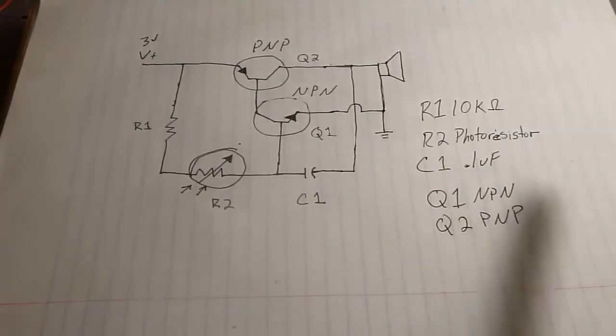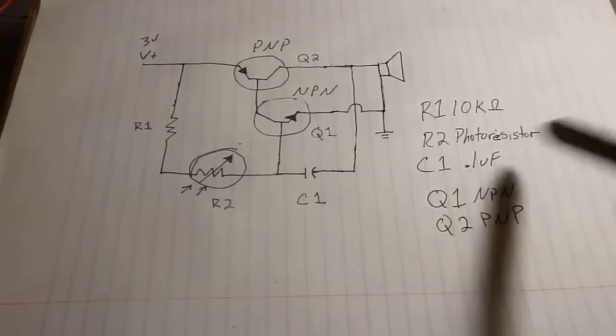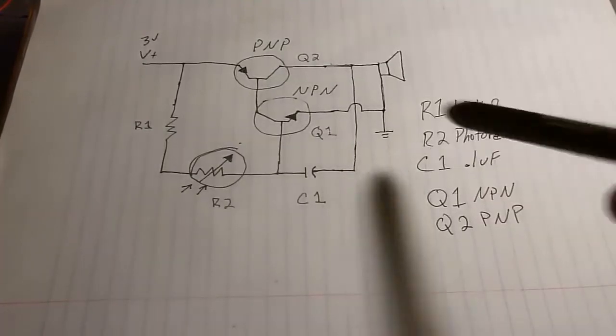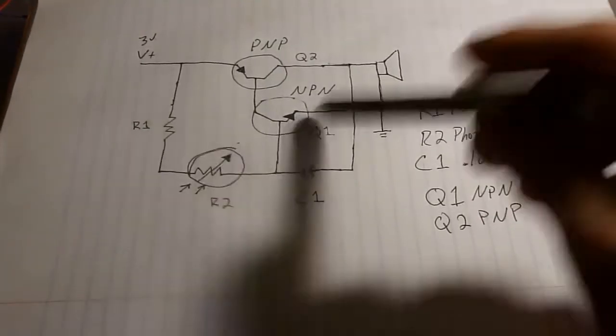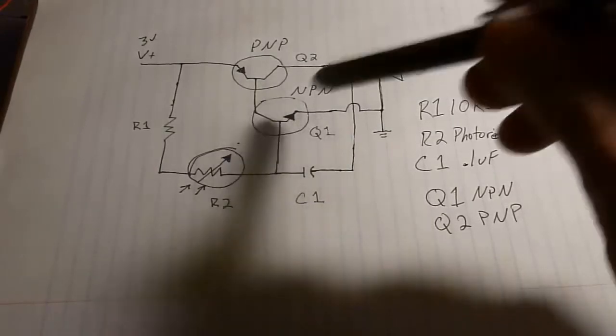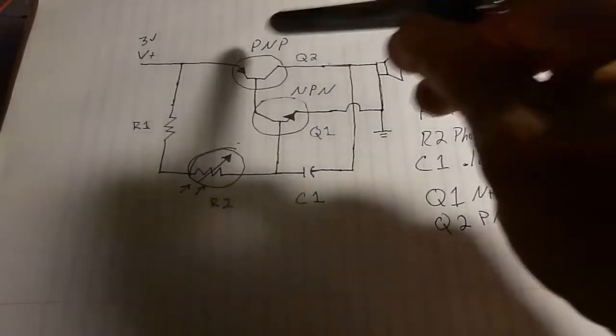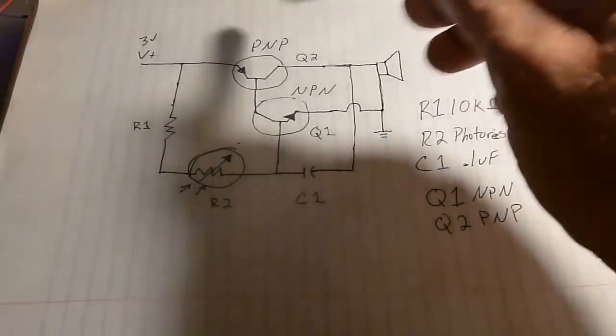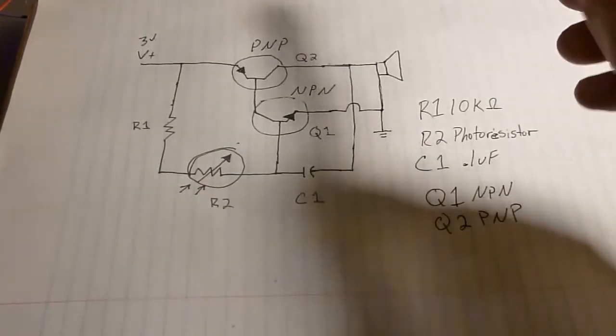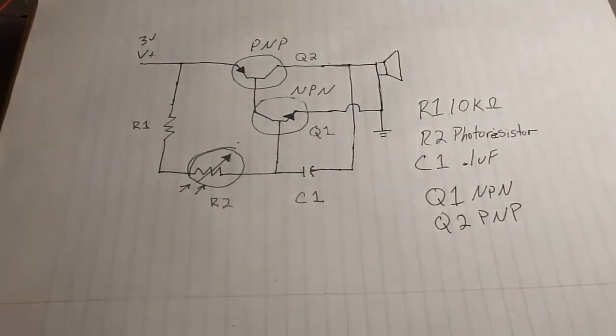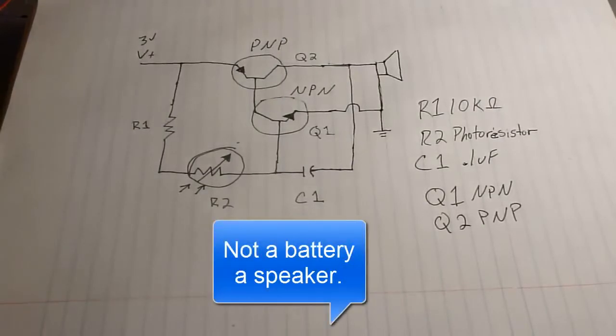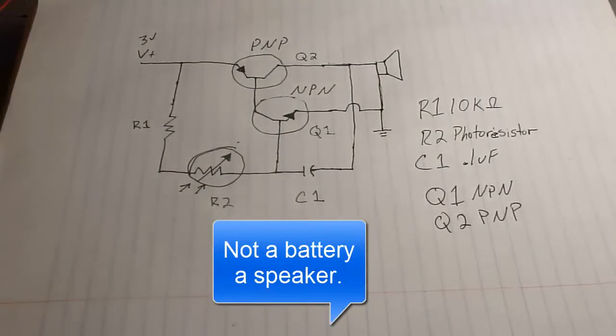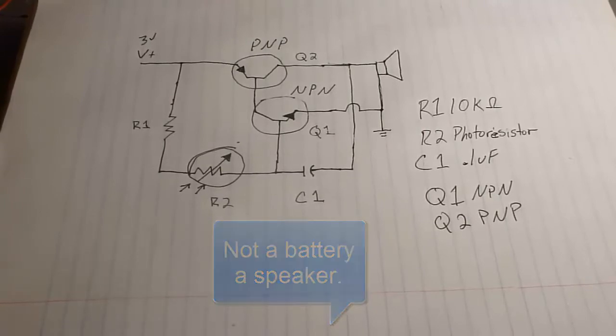I'll swap it out also with a larger capacitor to show how it affects the circuit. Q1 is just going to be any general NPN transistor. Q2 is going to be the same, a general PNP transistor, and then just a little speaker here. I think I used a 0.3 watt 8 ohm speaker.